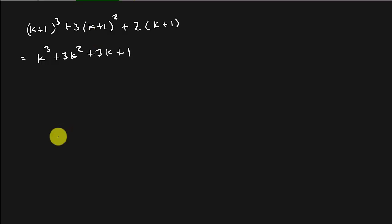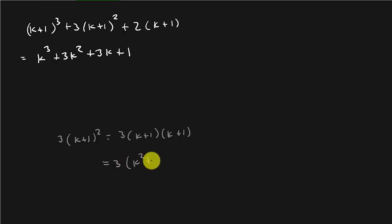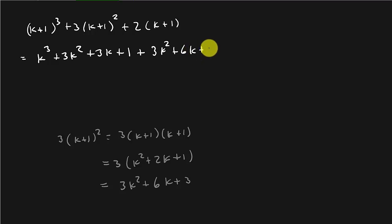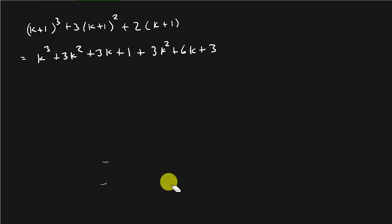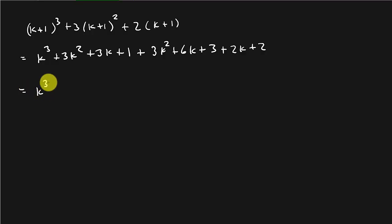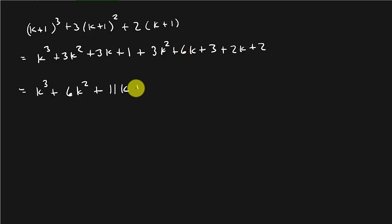Then we've got 3 times (k+1) squared, which is 3 times (k+1)(k+1). That's 3 times (k squared plus 2k plus 1), which is 3k squared plus 6k plus 3. And then here we just distribute the 2, so plus 2k plus 2. Combining all the like terms, that's k cubed plus 6k squared, and then 3k plus 6k plus 2k is 11k, and then plus 3.